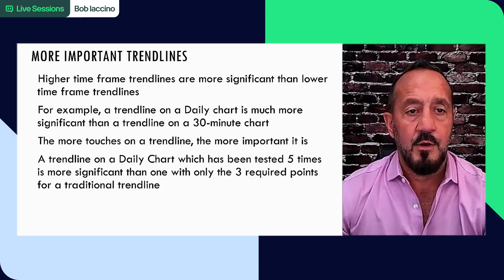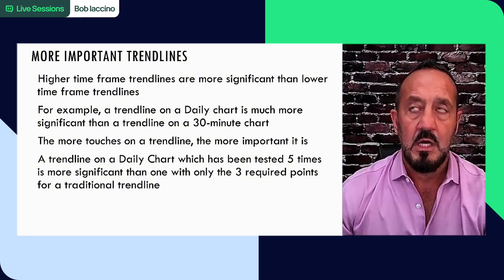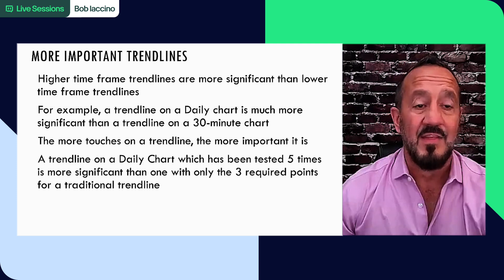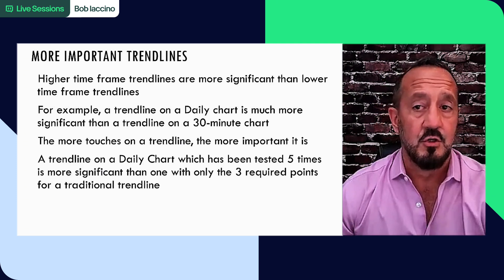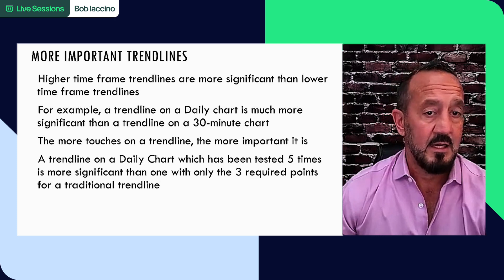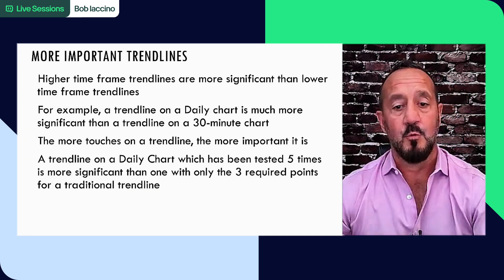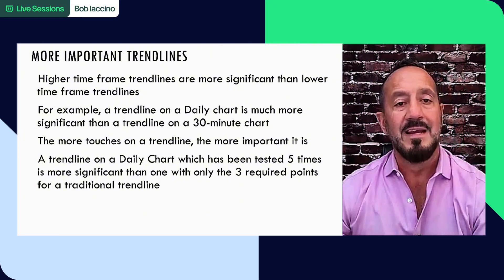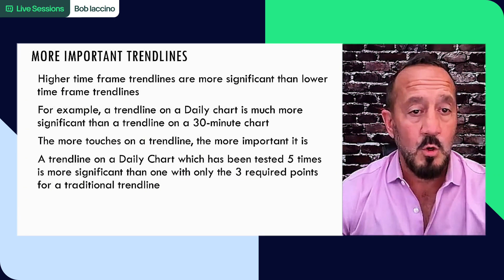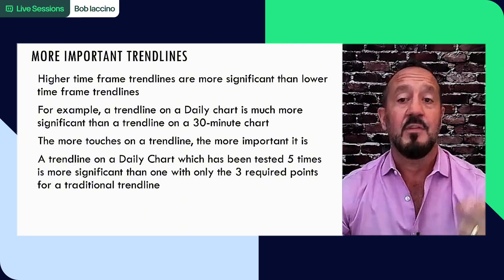More important notes on trend lines. Higher time frame trend lines are more important than lower time frame trend lines. If you're drawing trend lines on five-minute charts, you're likely to waste more time redrawing them than you are to get a traditional trend line that does you any good. A trend line on a daily chart is much more significant than a trend line on a 30-minute chart, because it's held with more data. The more touches on a trend line, the more important it is. I would argue that the more touches on a trend line, the more important a break of that trend line is.